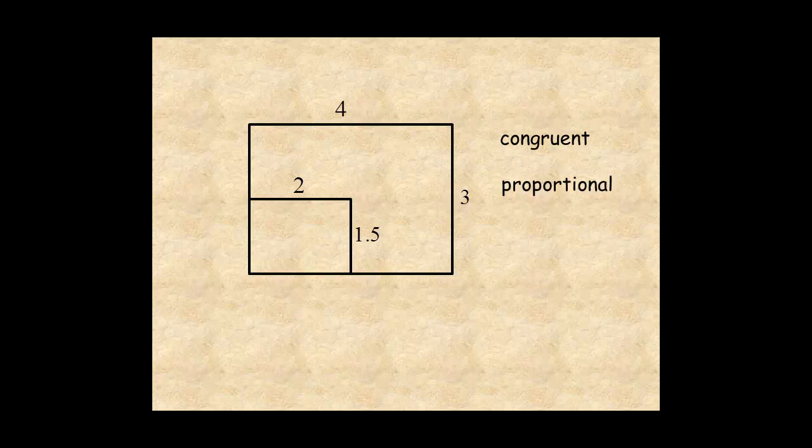In this diagram, the two rectangles have congruent angles. If you check the ratios of the sides, you can see they are equal. The value of the ratio is the scale factor.